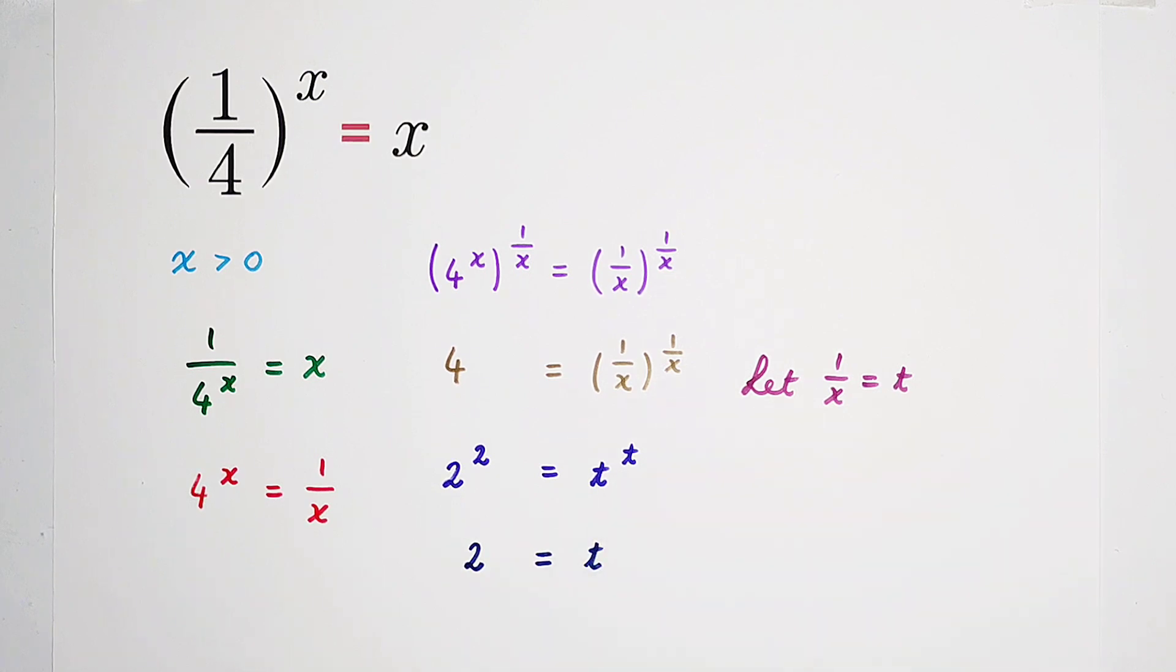Then, what shall we do? Two is t, so that means two is equal to one over x. What is x? Of course, x is one over two. So we get that the value of x is one over two.